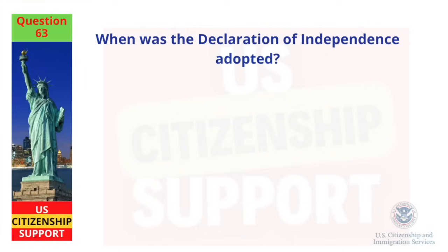When was the Declaration of Independence adopted? July 4, 1776.